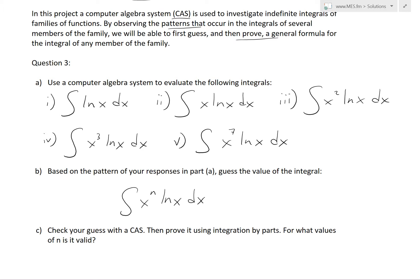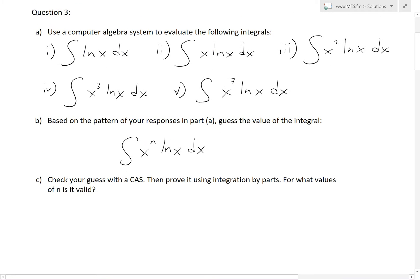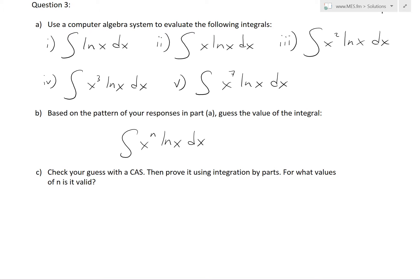Integral of this one is ln x, and the second one is x ln x, and this is x squared ln x. This is x cubed ln x. This is x to the power of 7 ln x. And then once you solve those, part B says, yeah, part B says,